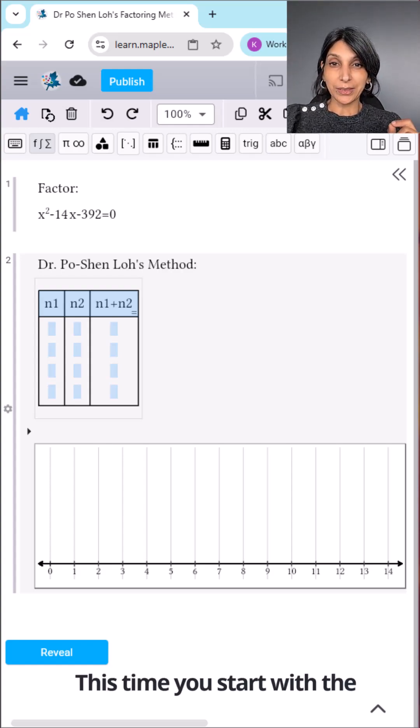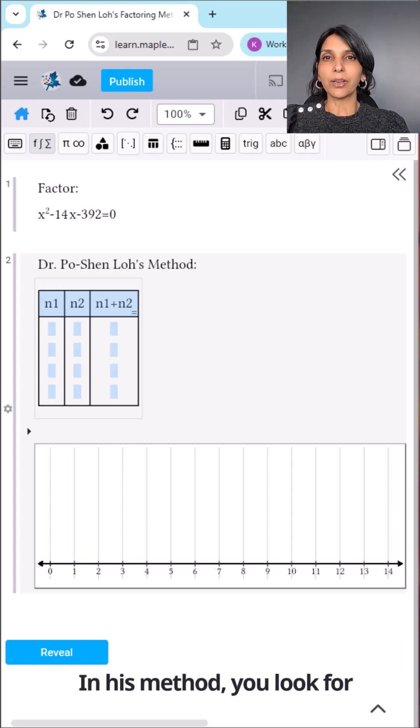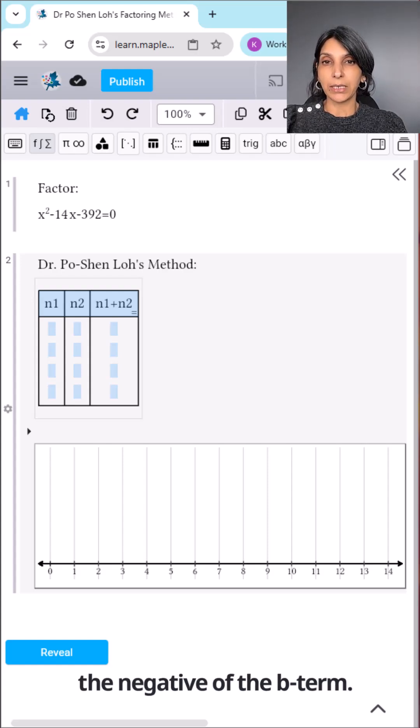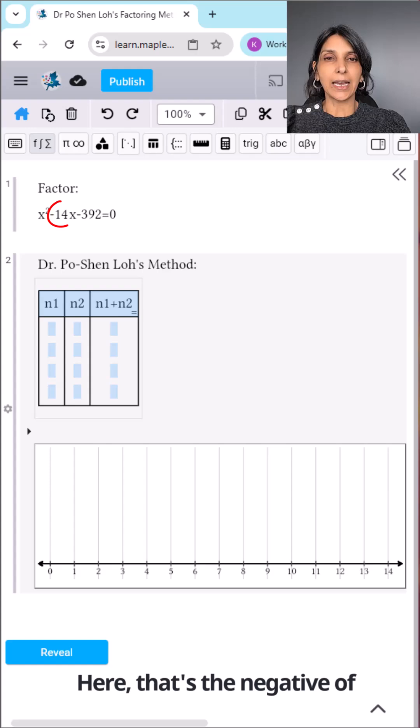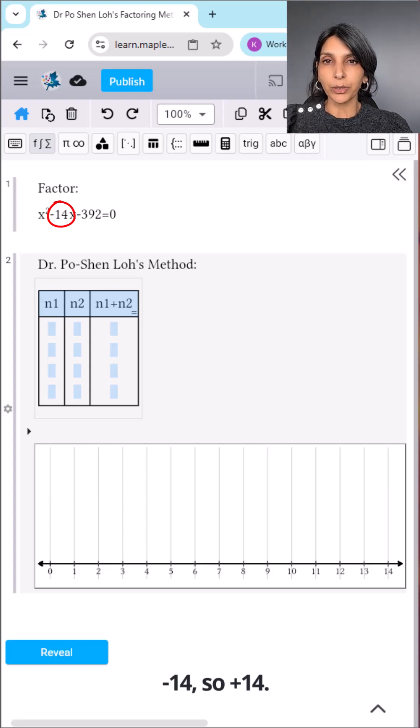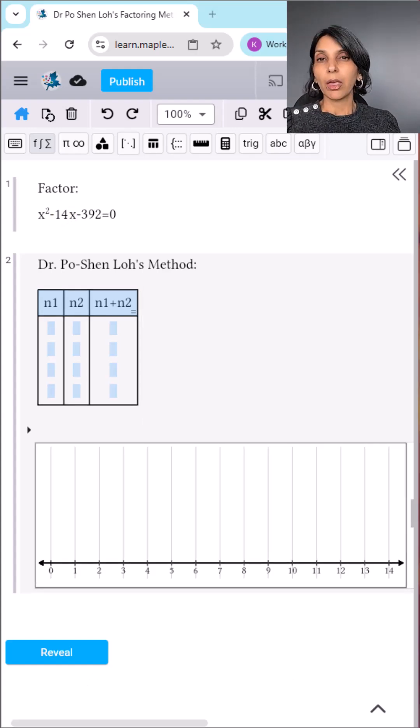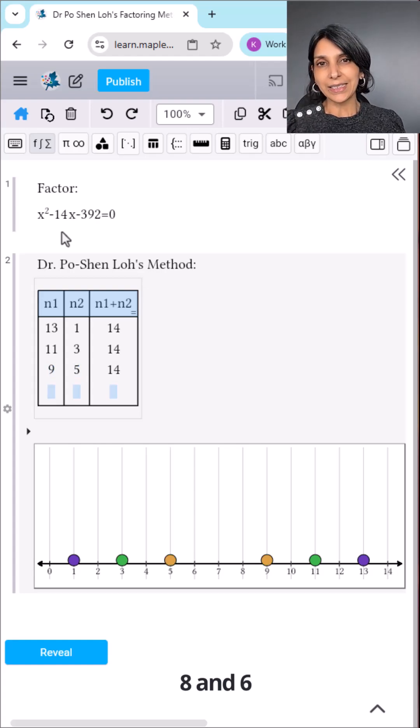This time you start with the sum and not the product. In his method, you look for two numbers that add up to the negative of the b term. Here, that's the negative of negative 14, so positive 14. Let's try a few numbers. 13 and 1, 11 and 3, 9 and 5, 8 and 6.